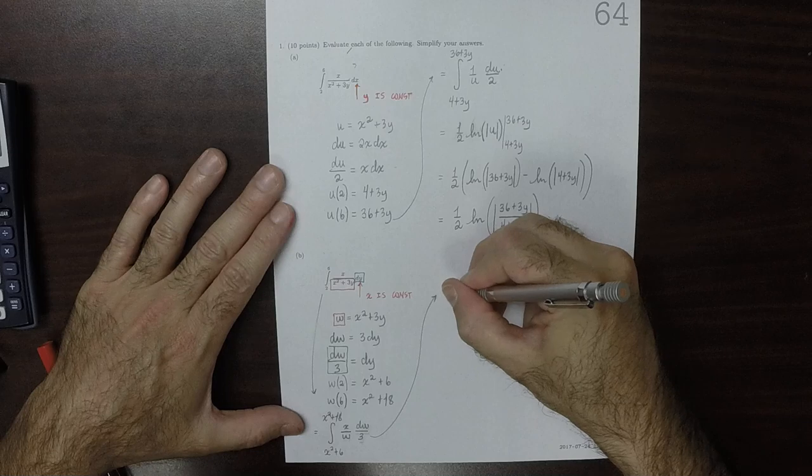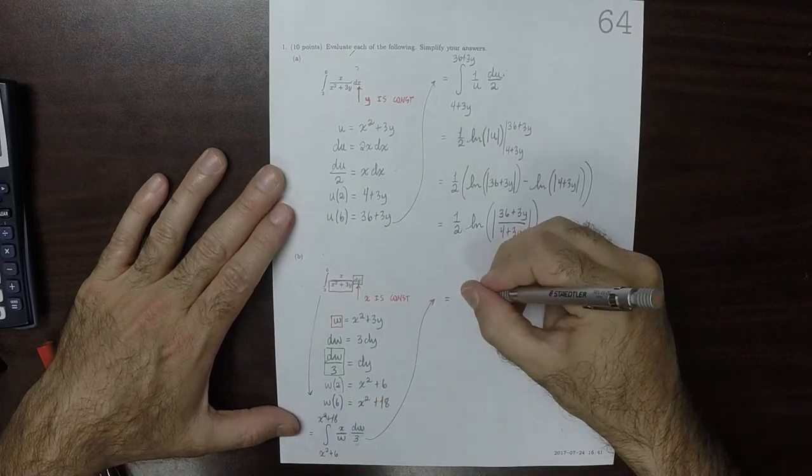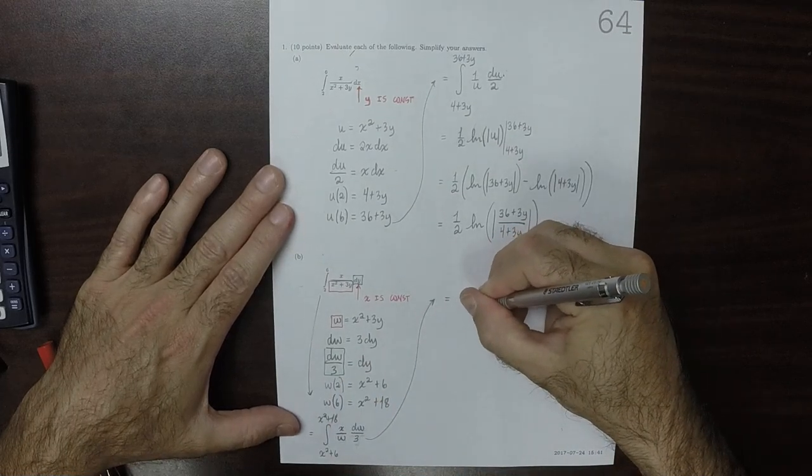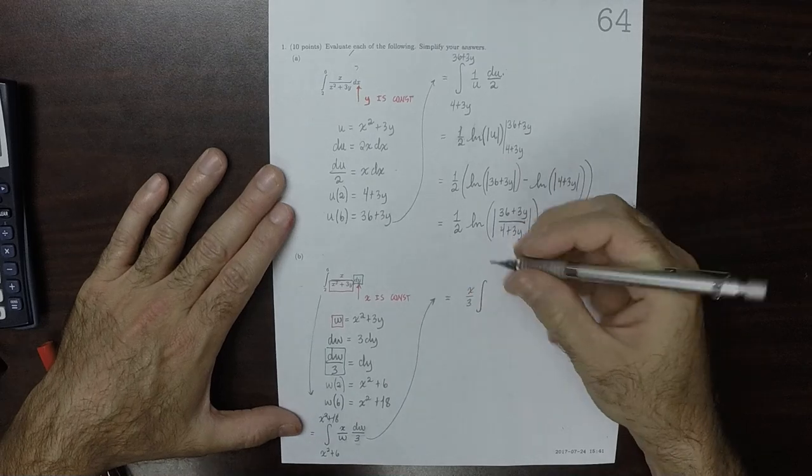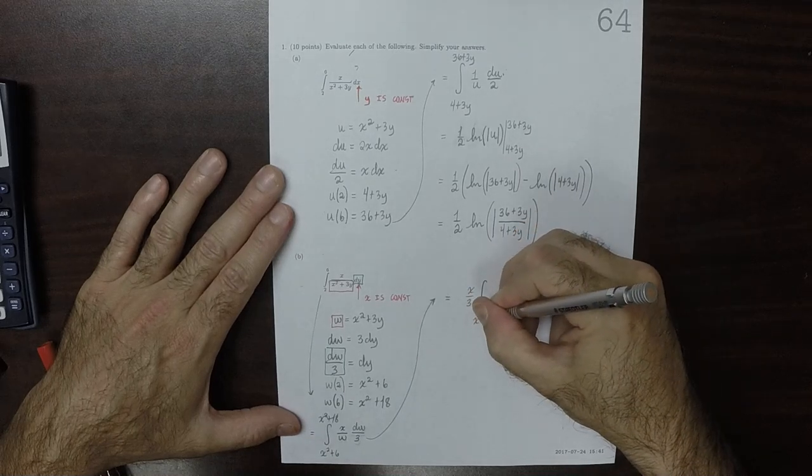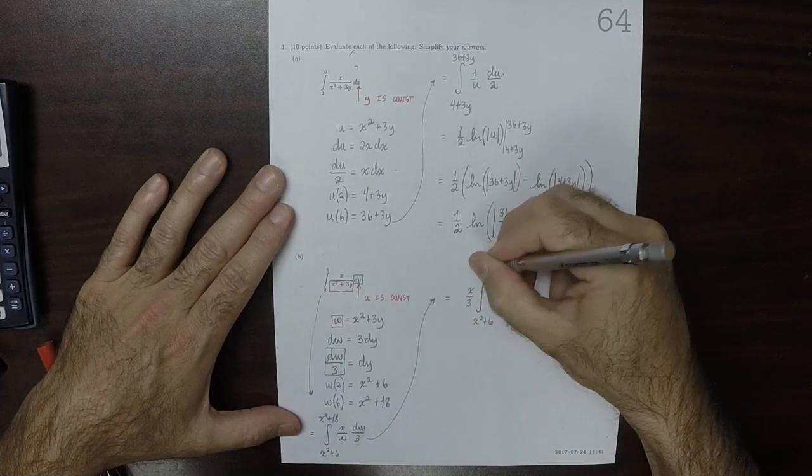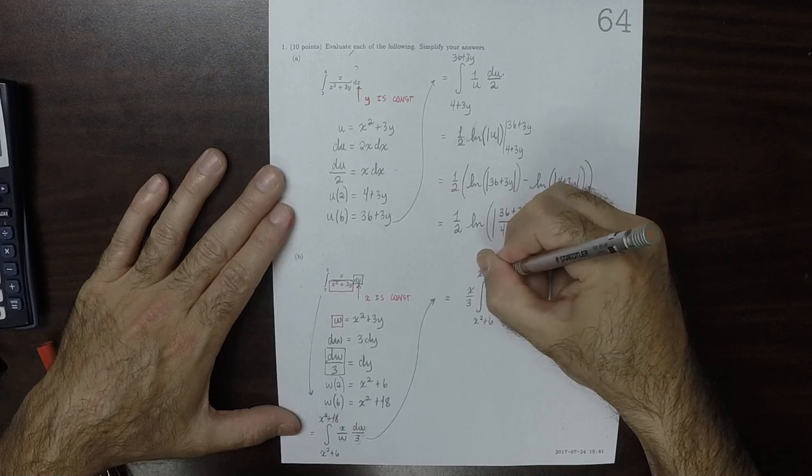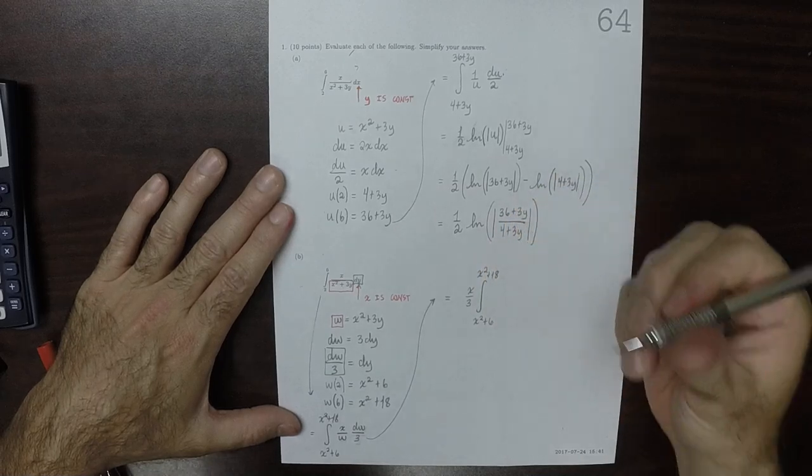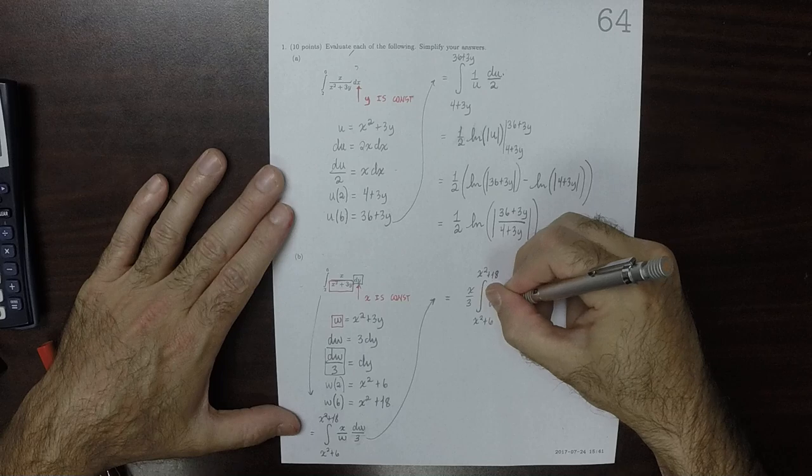So now we can factor out the x over 3, because x is a constant after all. So x over 3, integral from x squared plus 6 to x squared plus 18. Now 1 over w, dw.